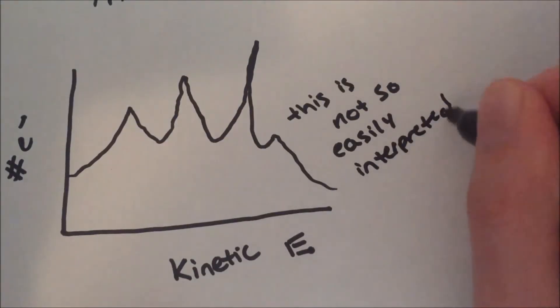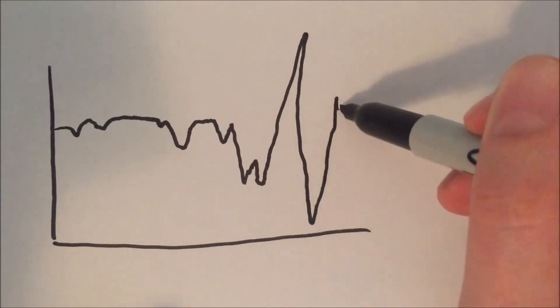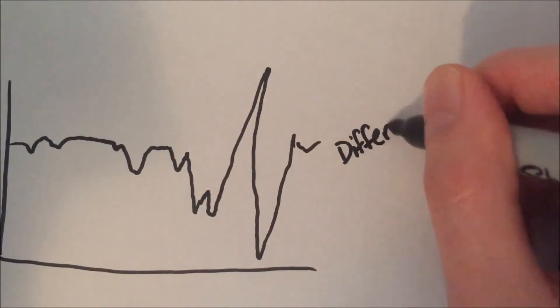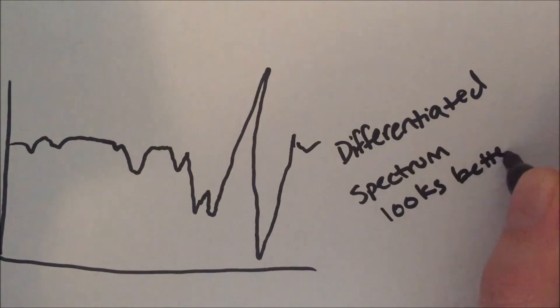However, the differentiated spectrum sharpens the peaks in the Auger spectrum, making it more clear the unique spectral features in each spectrum. The differentiated spectrum is the most common method for Auger electron analysis.